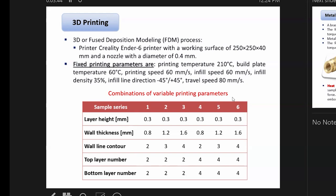With special software where we created a 3D model or prototype, we started with fixed and variable parameters. We made printing temperature of about 210 Celsius, build plate 60 Celsius, printing speed 60 millimeters per second, infill speed and infill density as shown on the slide.